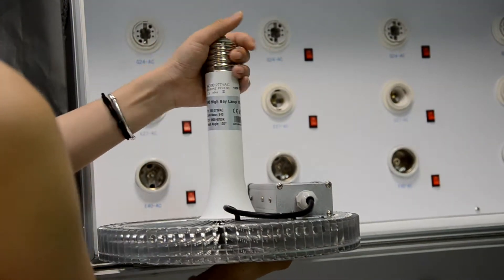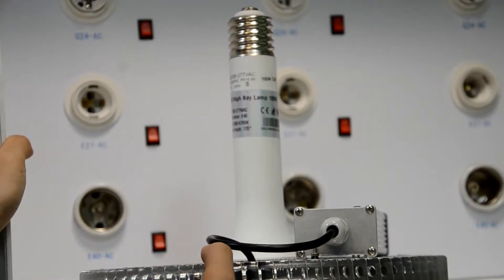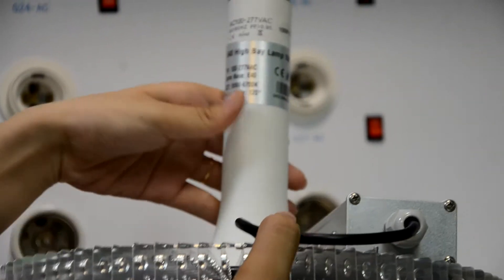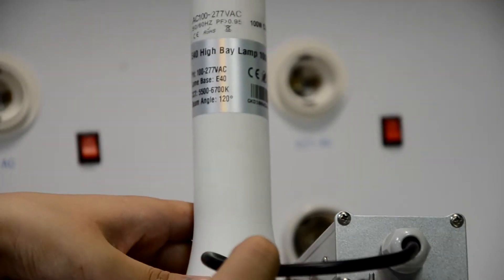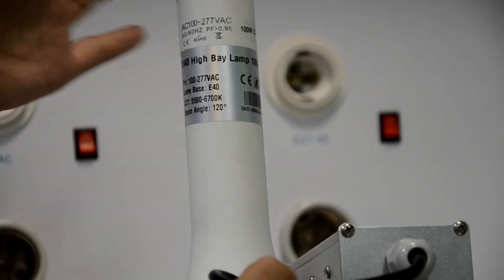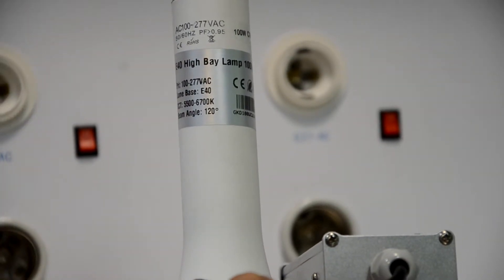Today I will show you the 100 Watt E40 base high bay lamp. The voltage range is from 100 to 277 VAC. The lamp base is Edison base E40, and we also can do E27.